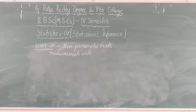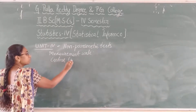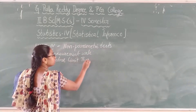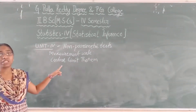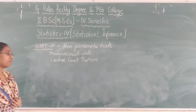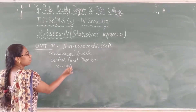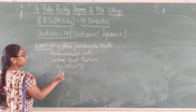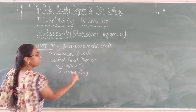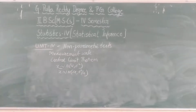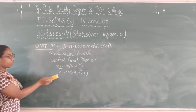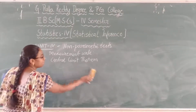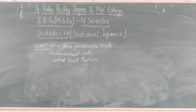Next, we are going to study the central limit theorem. The central limit theorem gives the distribution of the sample mean. If X follows normal with mean μ and variance σ², then x̄ follows normal with mean μ and variance σ²/n. This gives the distribution of the sample mean x̄.